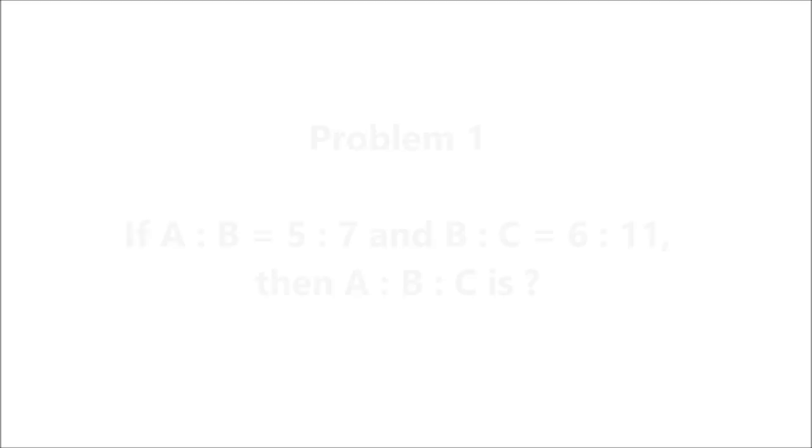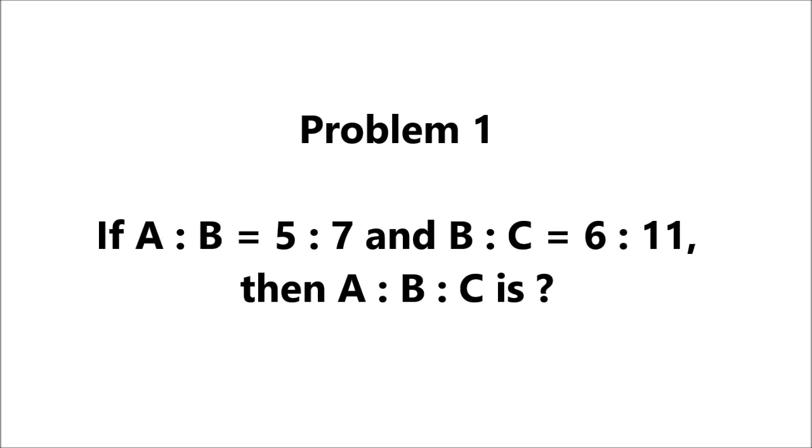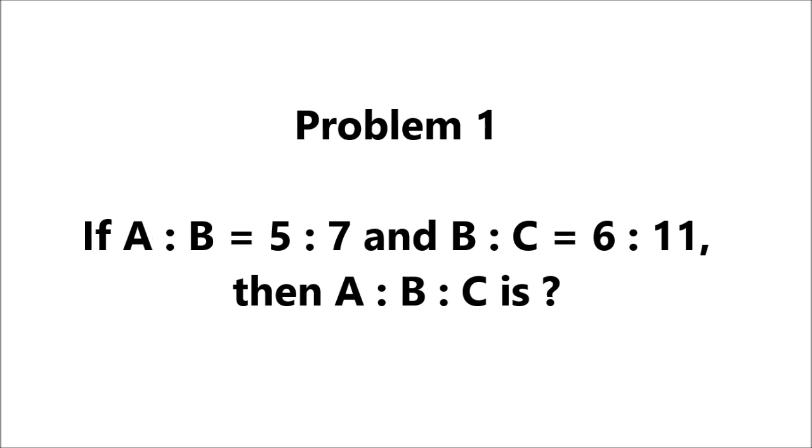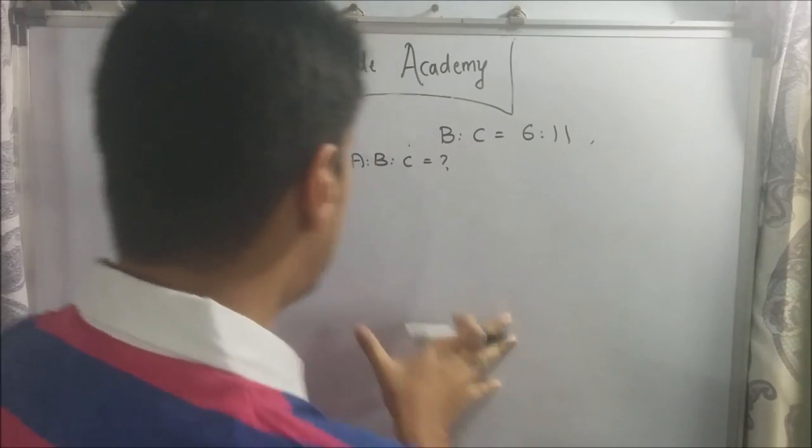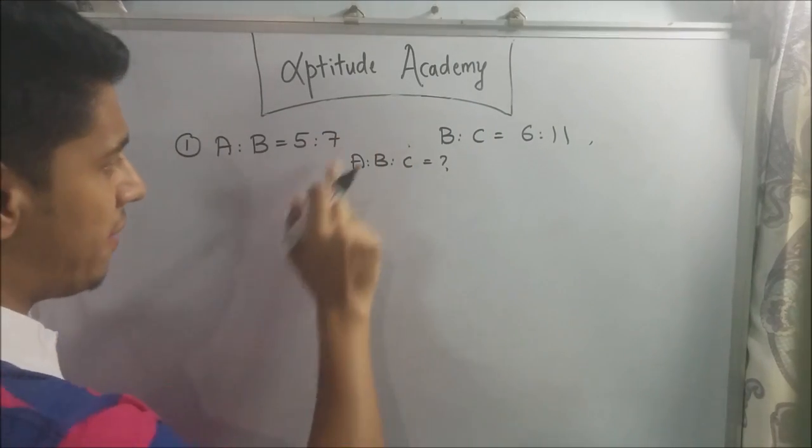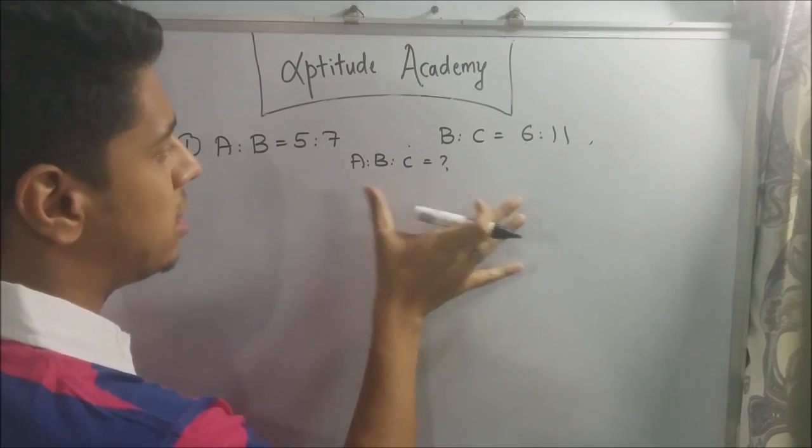Here's the first problem. Problem 1. If a is to b is equal to 5 is to 7 and b is to c is equal to 6 is to 11, then a is to b is to c is? Alright, for the first sum, we said that a is to b is equal to 5 is to 7 and b is to c is equal to 6 is to 11. What is a is to b is to c?